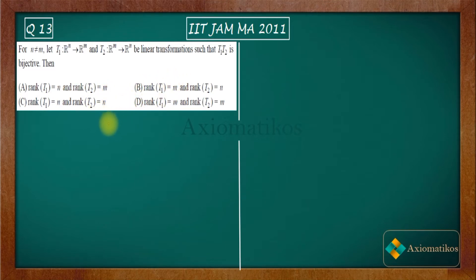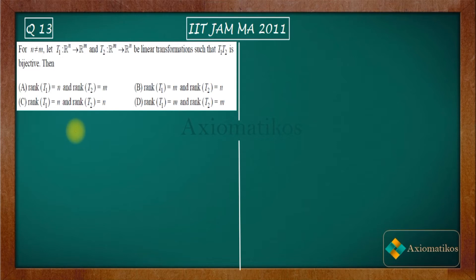It is given that the product of these two transformations is bijective. You have to check whether the rank of T1 and T2 are m or n.